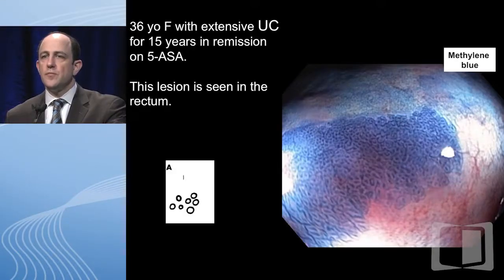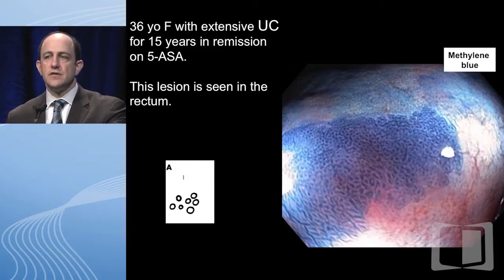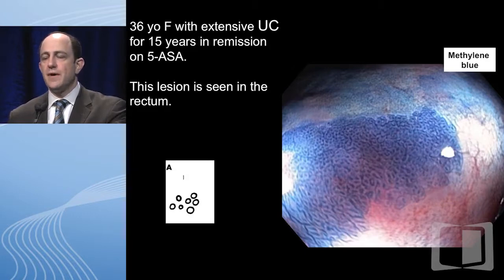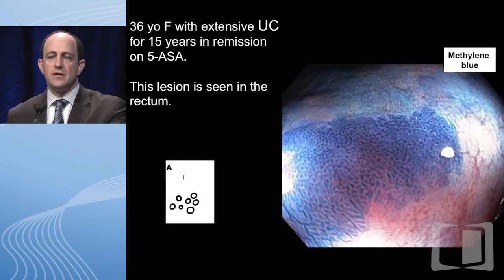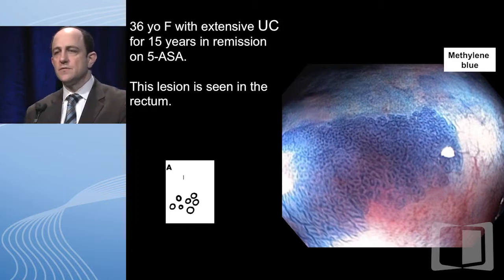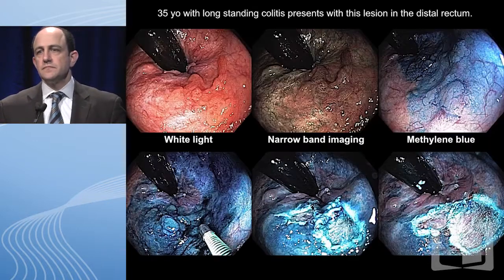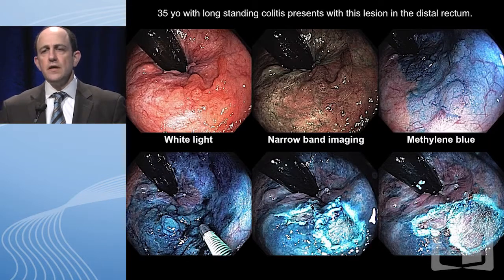A 36 year old woman with extensive UC for 15 years in remission on 5-ASA had this lesion seen in the rectum with methylene blue. The pit pattern is most consistent with a type 1. I did biopsy it — although when you get better at this you can appreciate how you might not need to biopsy everything — and this was in fact hyperplasia.